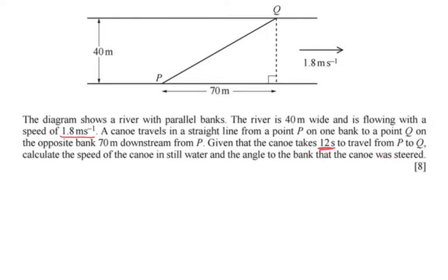Then we have to calculate the speed of the canoe in still water and the angle to the bank that the canoe was steered. Okay, interesting. So I've got to do two things. I've got to calculate the speed of the canoe in still water and the angle to the bank. Now that's a very interesting question. And so thank you for asking it. Now what is important? If they would just ask me the speed of the canoe, I would do the distance over the time, right? Speed distance over time and the time is 12 seconds. But they're not asking me the speed of the canoe. They're asking me the speed of the canoe in still water.